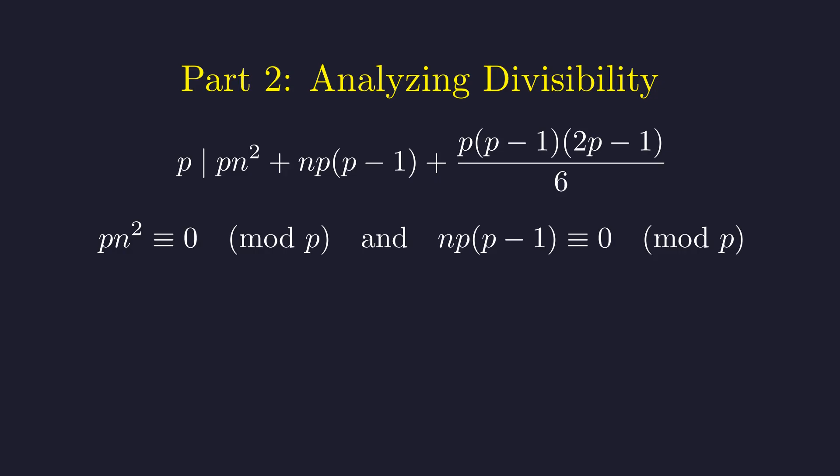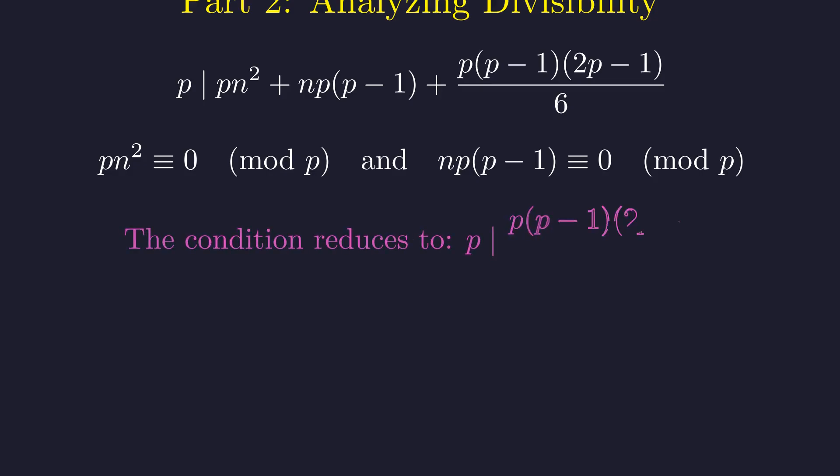Since the first two terms are divisible by p, our condition reduces to analyzing just the third term. Our entire complex problem has been reduced to determining if p divides this fraction. We can factor out p from the numerator immediately.